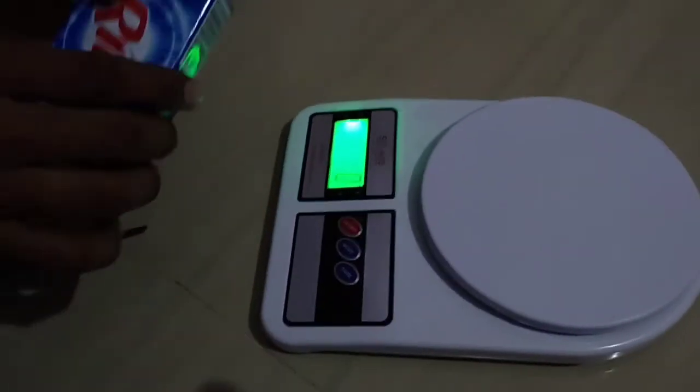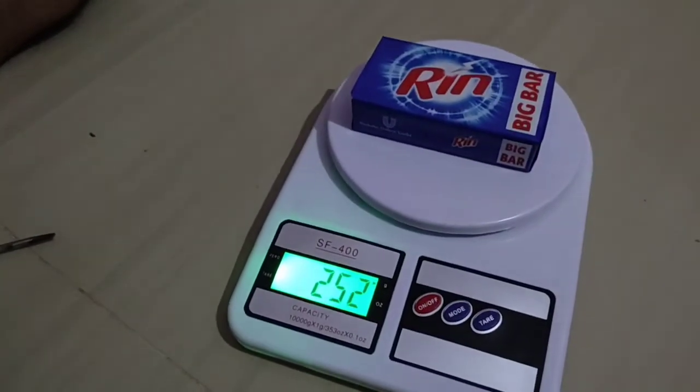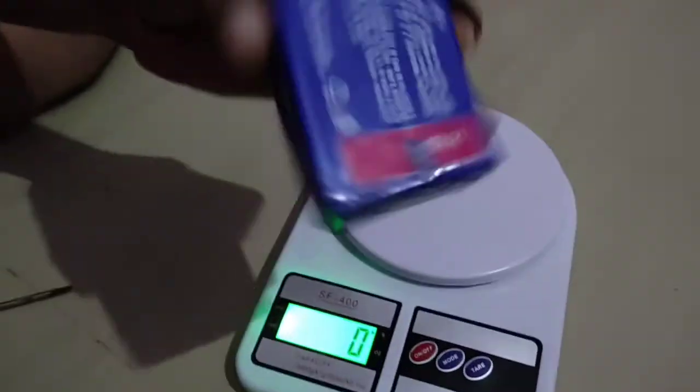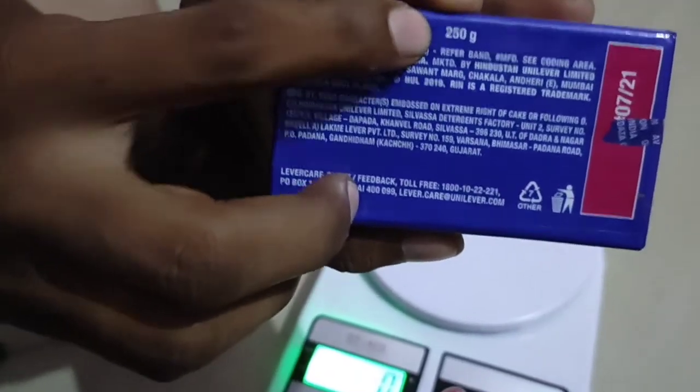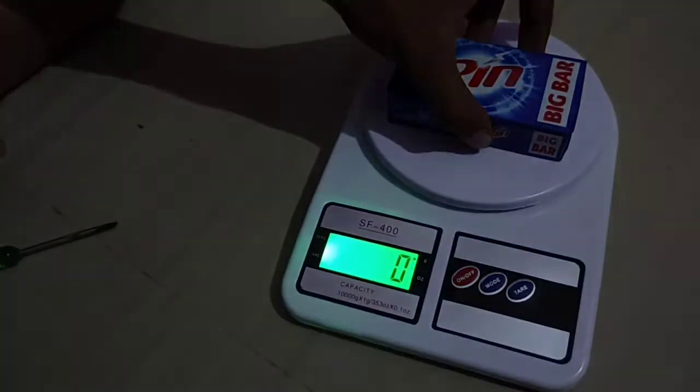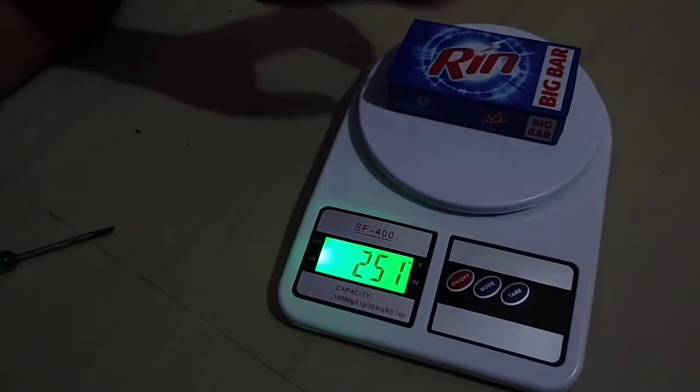250g of soap. This is showing 252g, just 1-2g difference. It's perfect now.